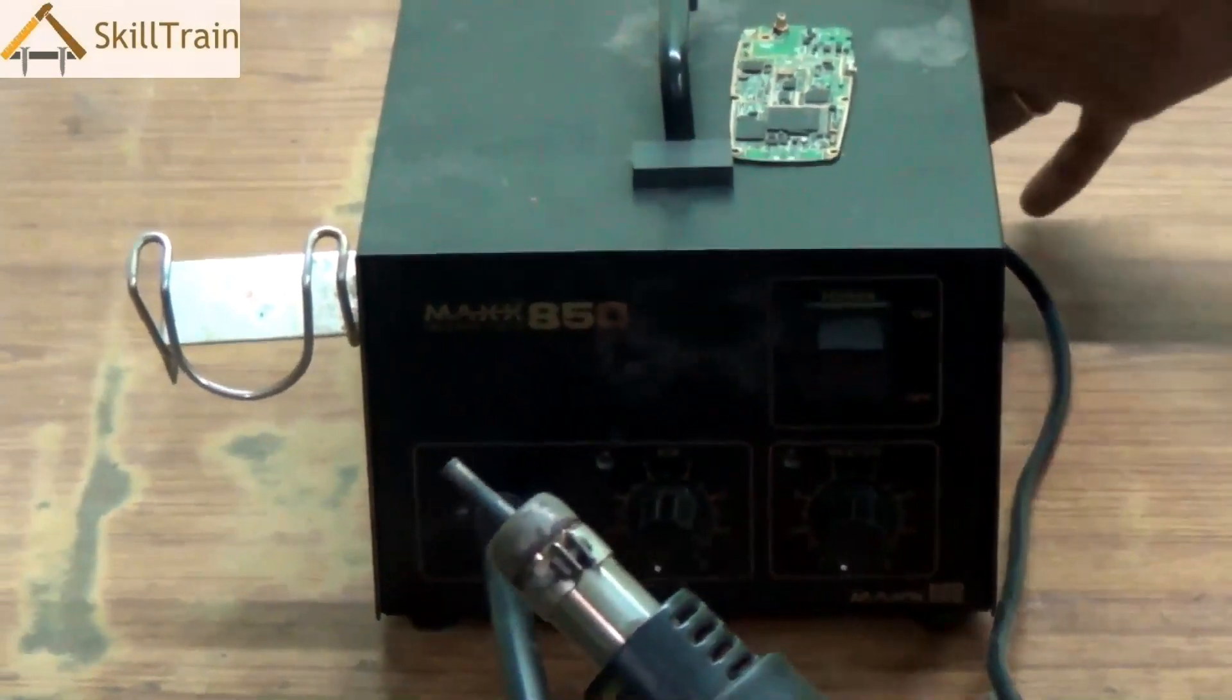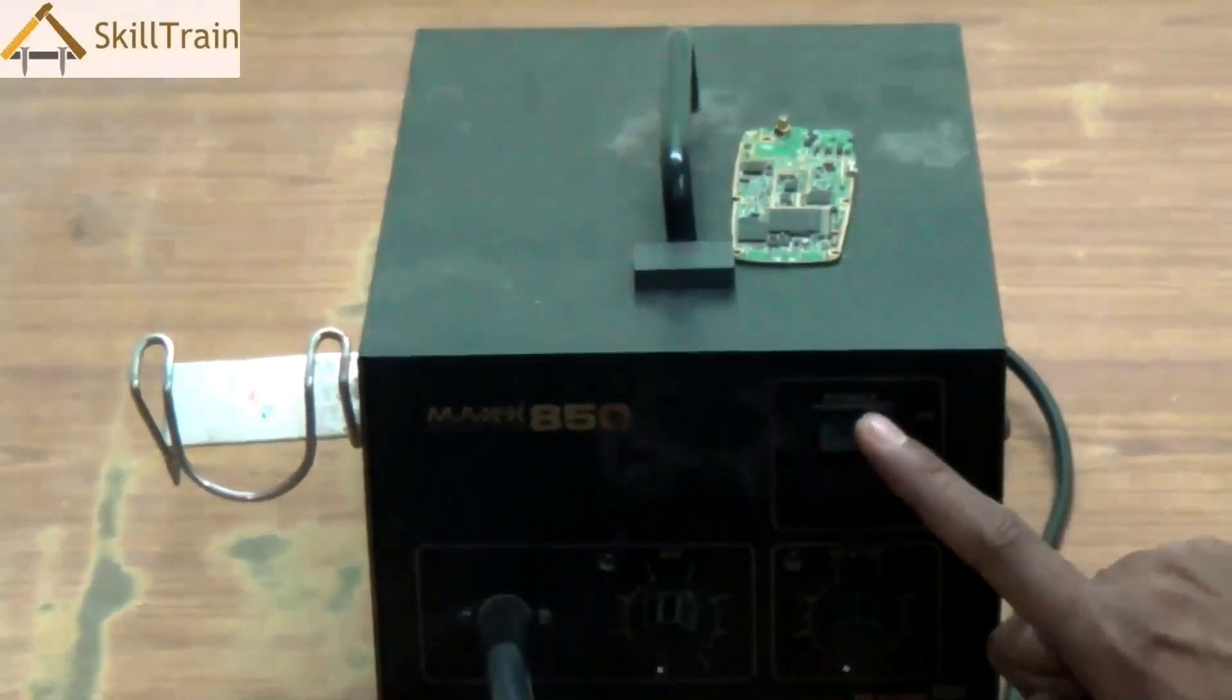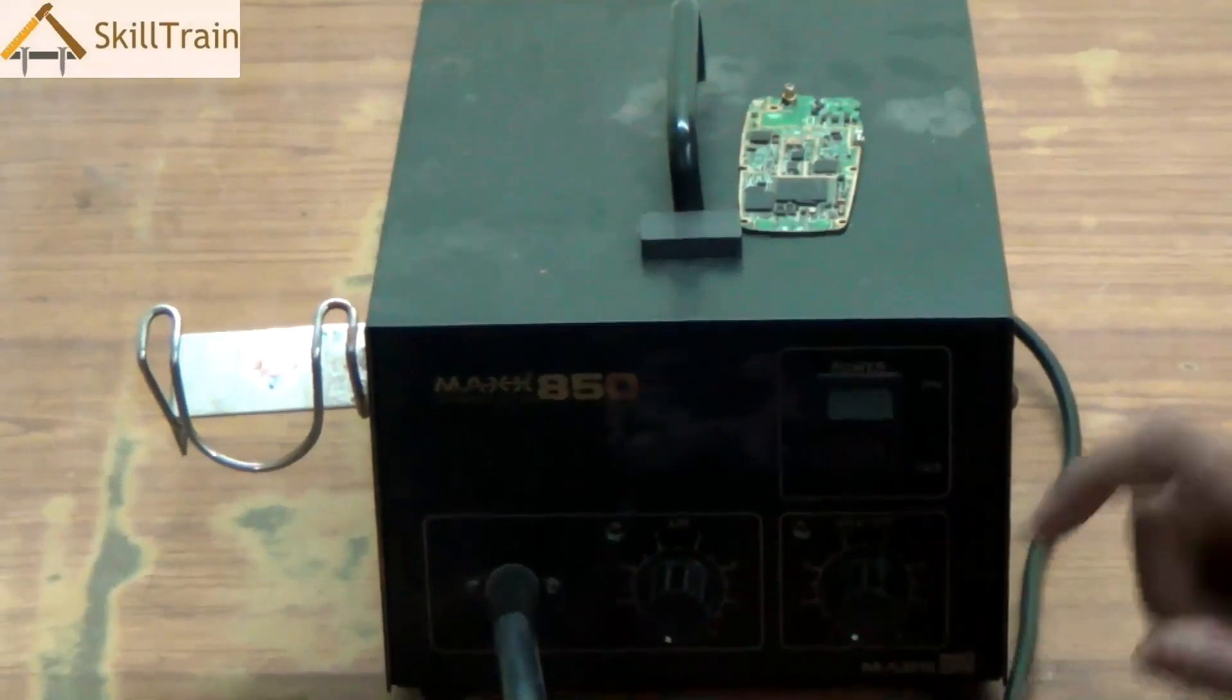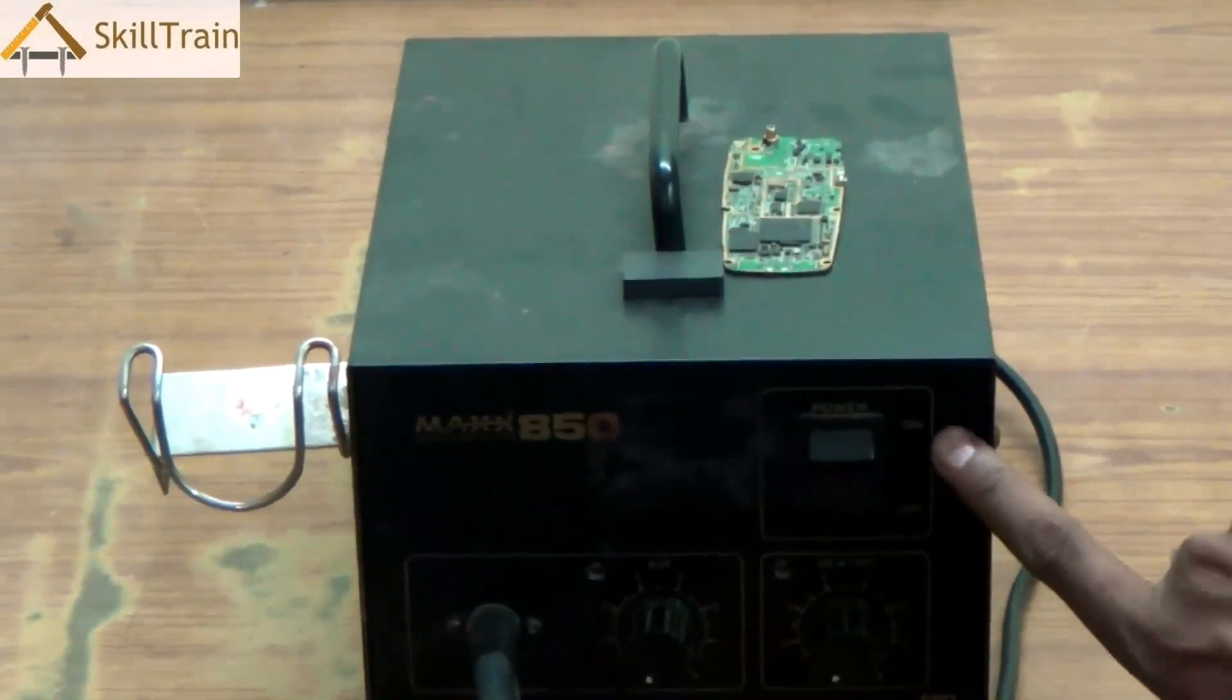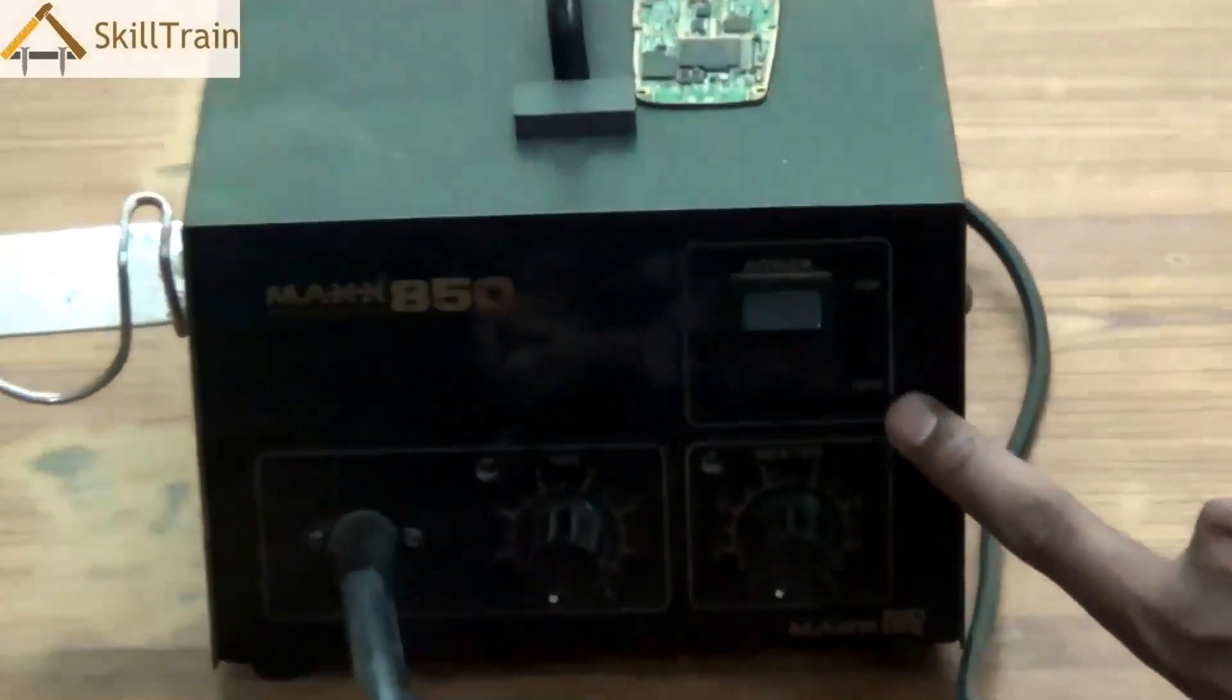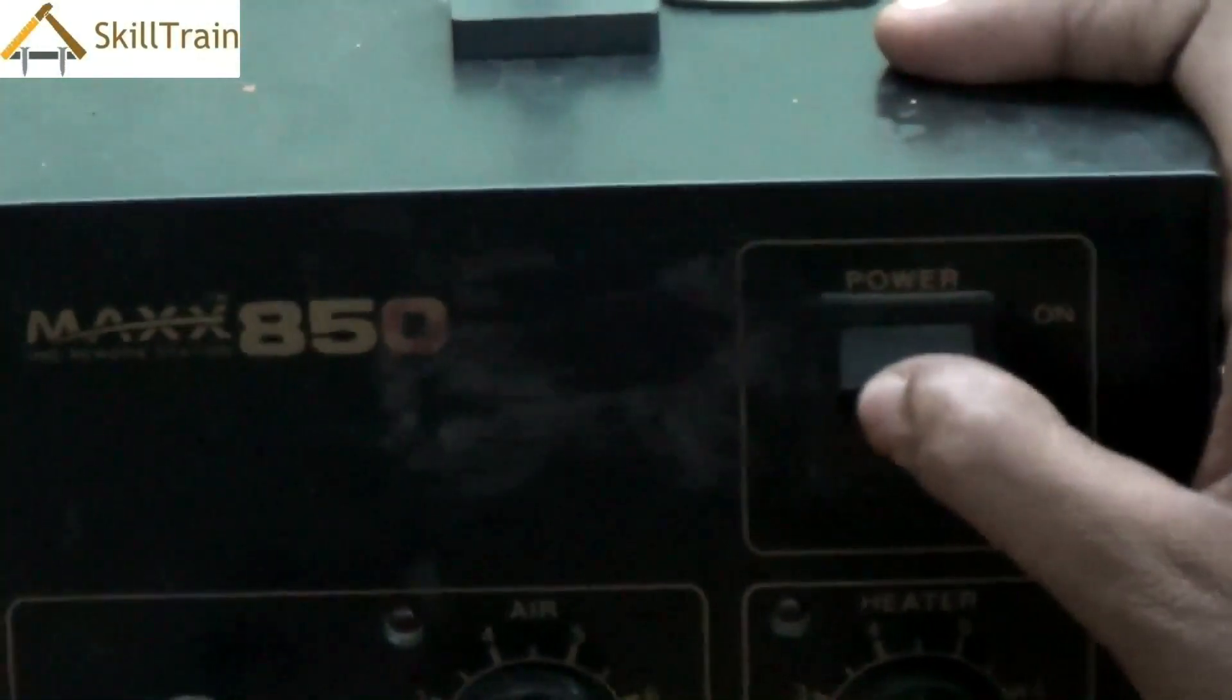Now to switch on the SMD, there is a separate power switch given in the SMD. Now you can very clearly see the on and off positions marked in this switch. So once the main power is switched on, we switch this power on to commence the heating and the airflow operation.